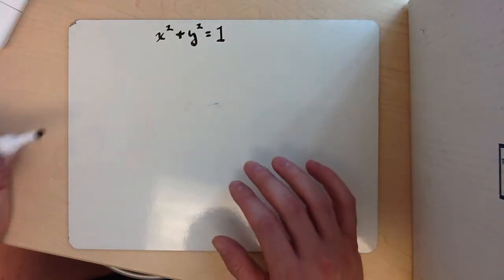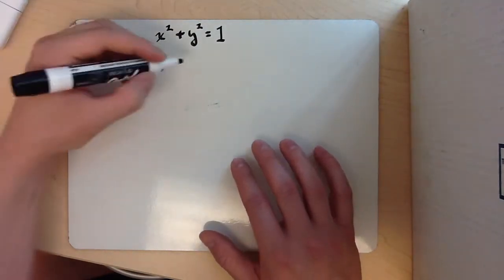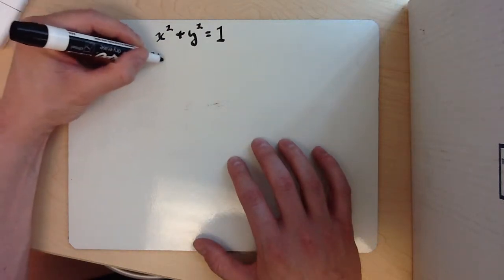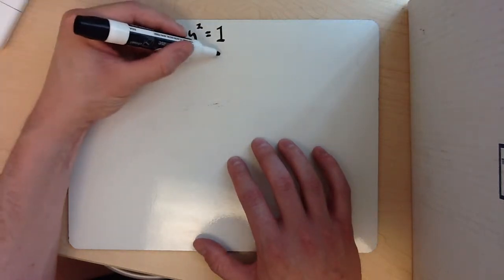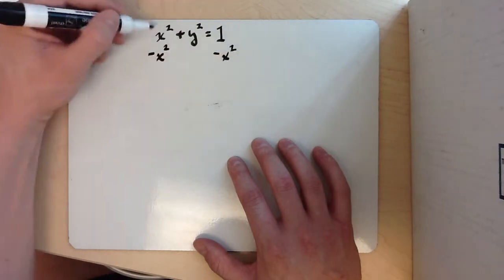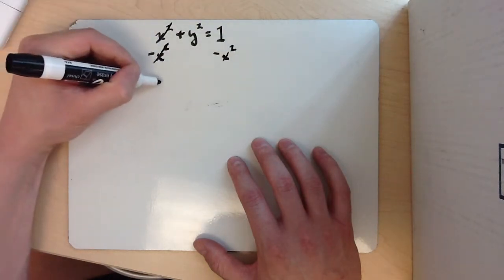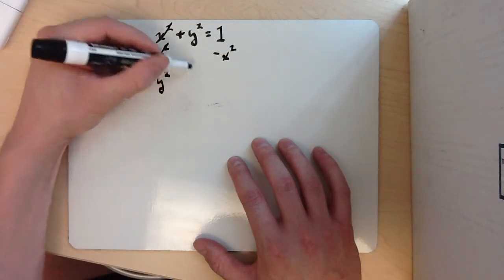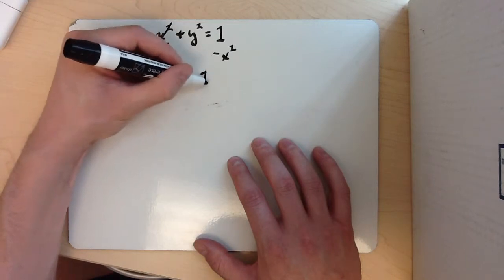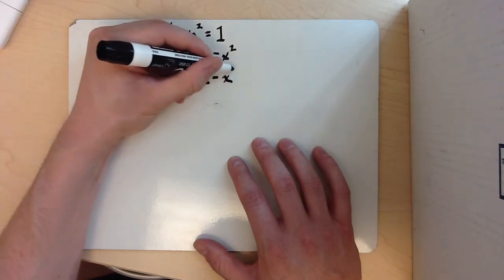The first thing I'm going to do is solve for y. So to do that, I'm going to subtract x squared from both sides. That's going to cancel. You'll end up with y squared is equal to 1 minus x squared.